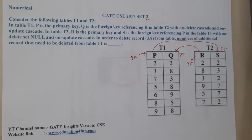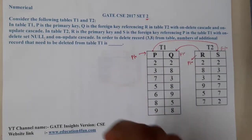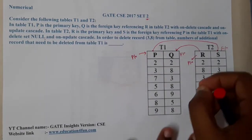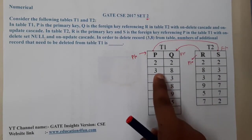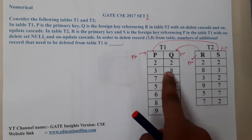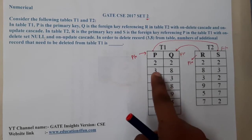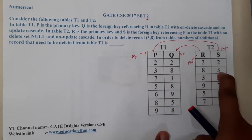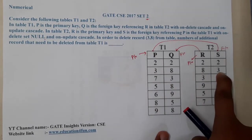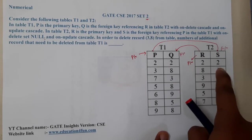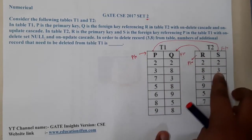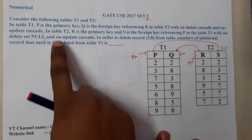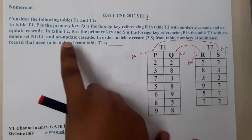Table T2 references P in T1 with ON DELETE SET NULL. ON DELETE SET NULL means if you are going to delete something, the referencing column is set to null instead of being deleted. For example, if we deleted the row with P=3, whoever maps to value 3 in the S column will be set to null — there is no deletion, only null is set.